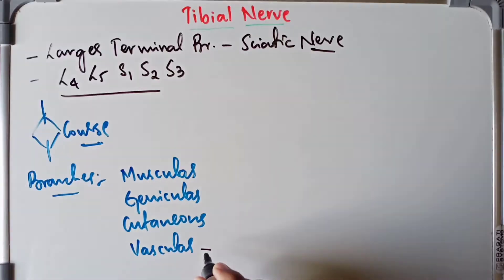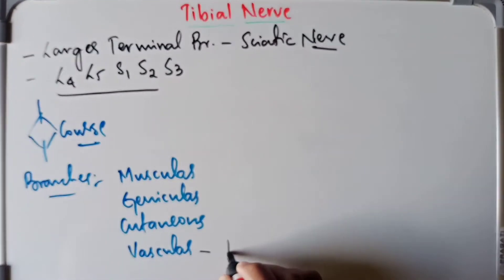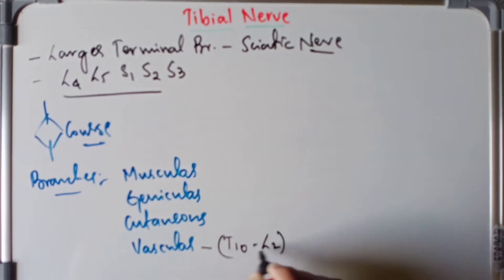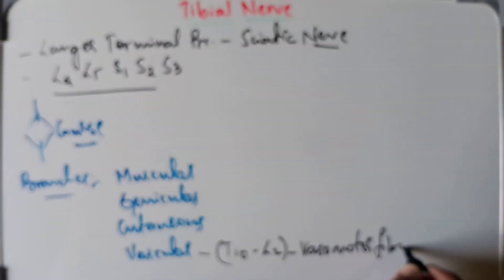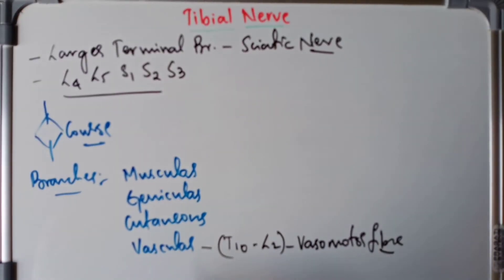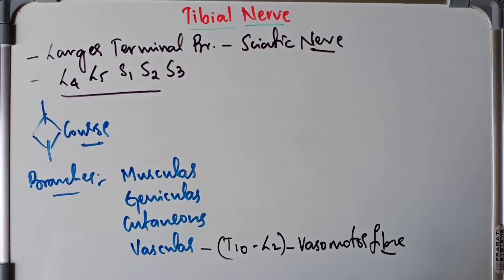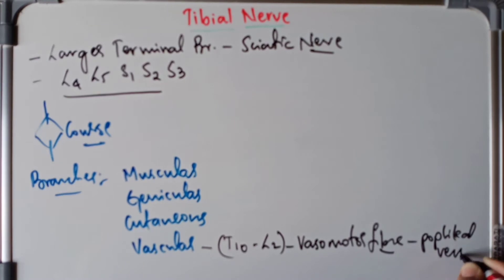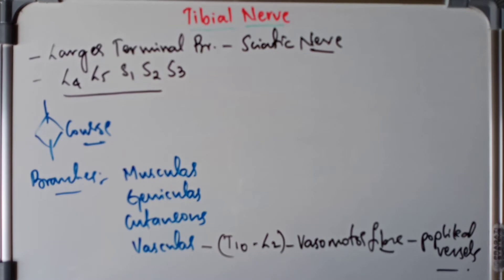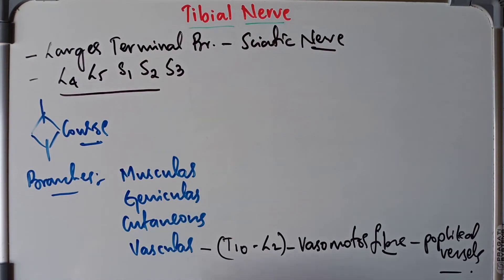When it comes to the vascular branches, they are going to supply the vasomotor fibers from T10 to L2 to the popliteal vessels. So the vascular branches of the tibial nerve supply the vasomotor fibers of T10 to L2 to the popliteal vessels.